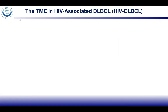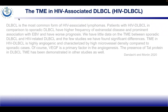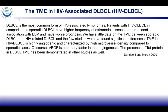Looking at the tumor microenvironment of HIV DLBCL: DLBCL is the most common form of HIV-associated lymphomas. Patients with HIV DLBCL, compared to sporadic DLBCL, have a higher frequency of extranodal disease, prominent association with EBV, and worse prognosis. The TME in HIV DLBCL is highly angiogenic and characterized by high microvessel density. VEGF is a primary factor in angiogenesis, and the presence of the Tat protein in DLBCL TME has been demonstrated in studies.